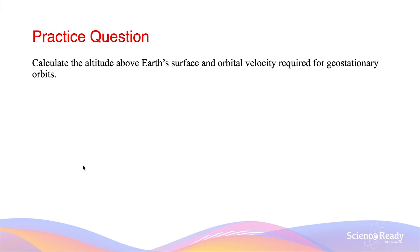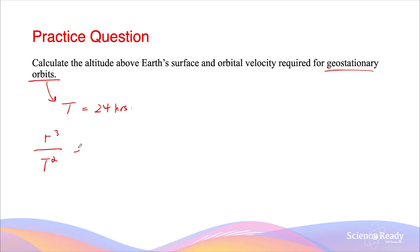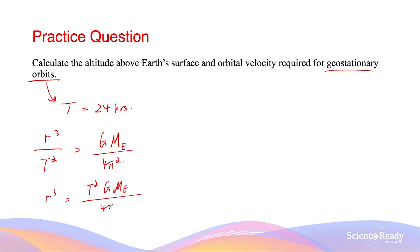Now let's calculate the altitude above Earth's surface and the orbital velocity required for geostationary orbits. We know that geostationary orbits have the unique property that their period is 24 hours. We can use Kepler's third law of orbital motion: R³ divided by T² equals GM divided by 4π², where M is the mass of the Earth. Multiplying both sides by T² gives R³ = T²GM / 4π², and then we cube-root both sides to find the orbital radius.